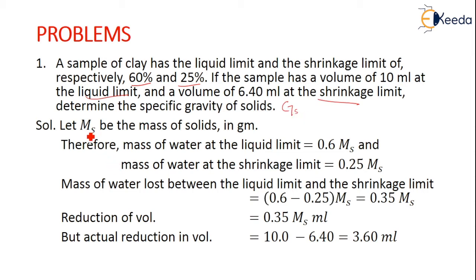Let us consider Ms as the mass of solids. The mass of water at the liquid limit is 60%, so we have to consider 0.6 times Ms, and the shrinkage limit 25%, that is 0.25 times Ms. The mass of water lost between the liquid limit and the shrinkage limit is 0.6 minus 0.25 times Ms, that is 0.35 Ms.